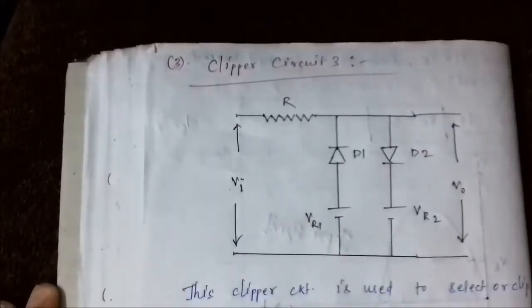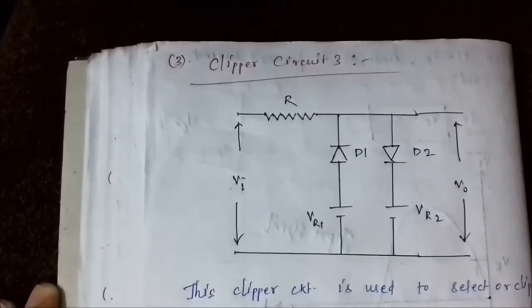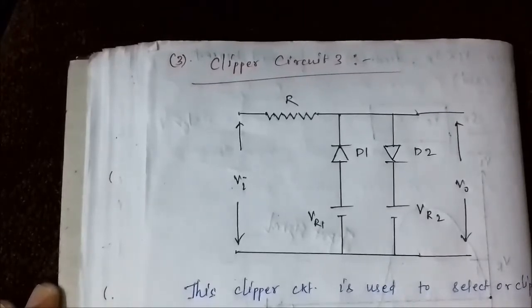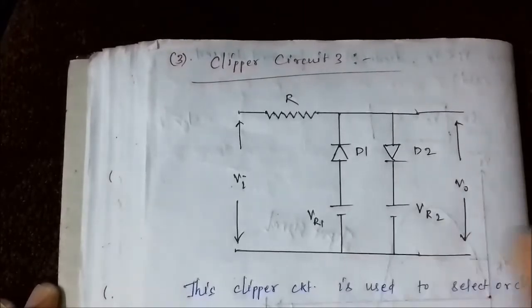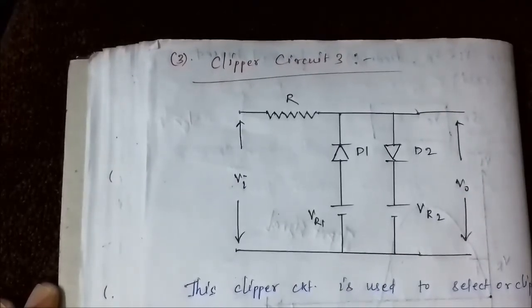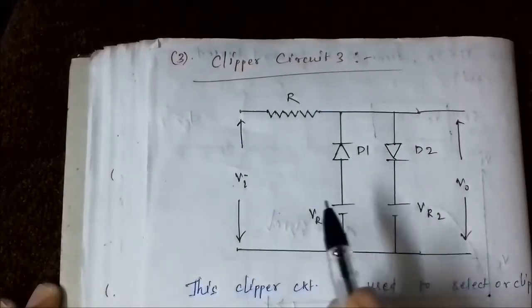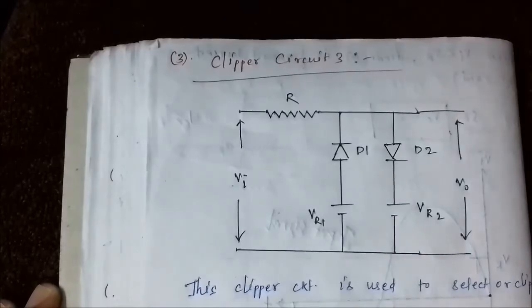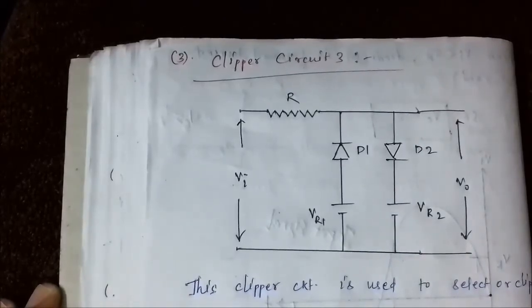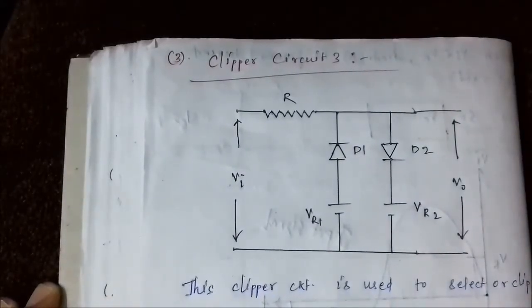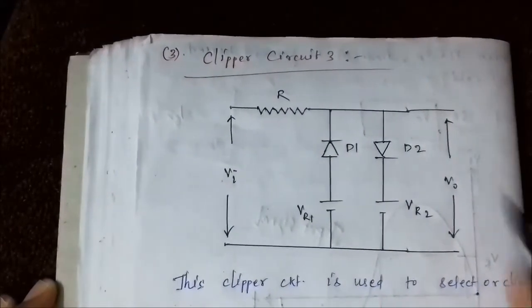Now we discuss clipping circuit number three. Its difference from type one and type two is that it has two diodes connected in opposite positions along with two independent reference voltage levels — V_R1 and V_R2. The rest is the same: a resistor connected in series with the input signal waveform, and the output voltage is taken from the two output terminals.